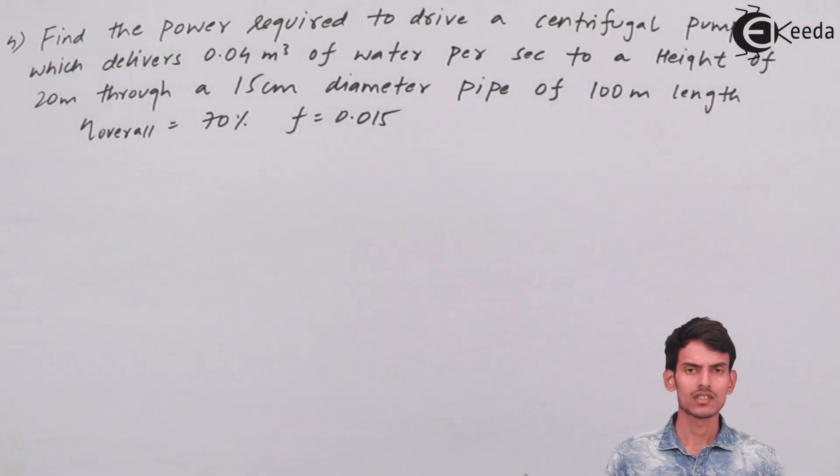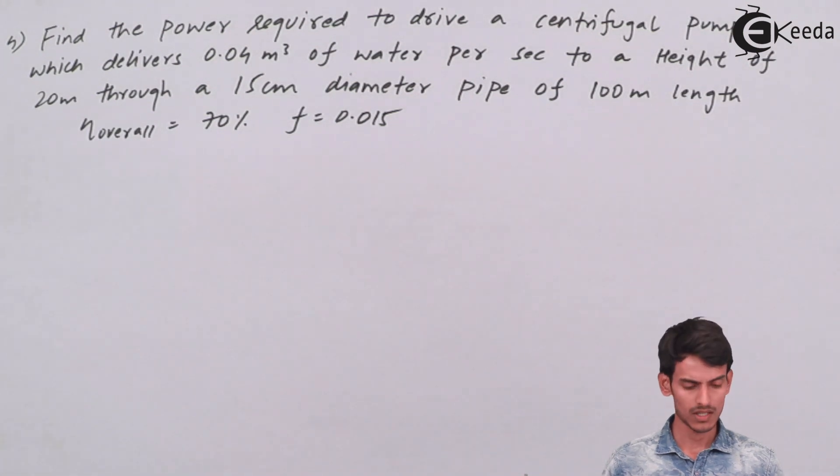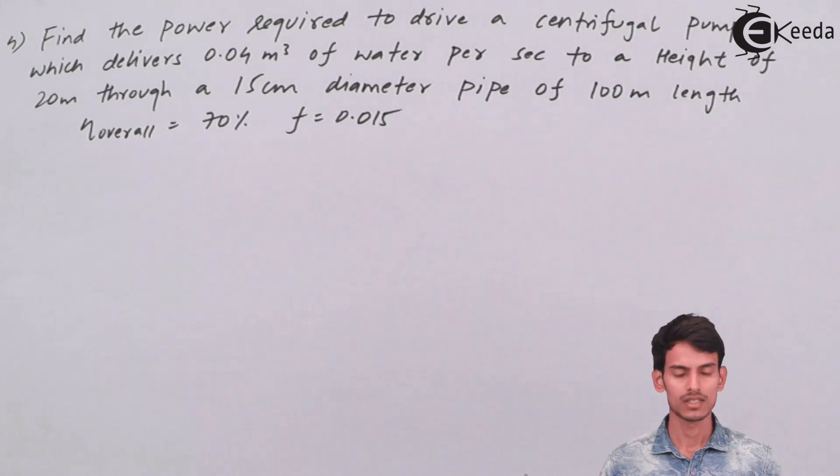Now let's see the fourth question on centrifugal pumps. Find the power required to drive a centrifugal pump which delivers 0.05 m³ of water per second to a height of 20 meters through a 15 cm diameter pipe of 100 meter length. Overall efficiency is 70% and the friction factor is 0.015.